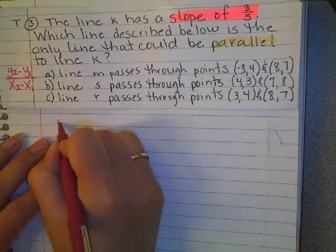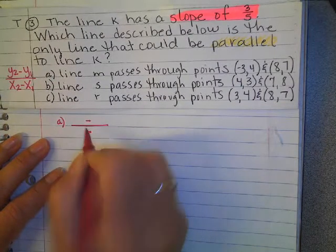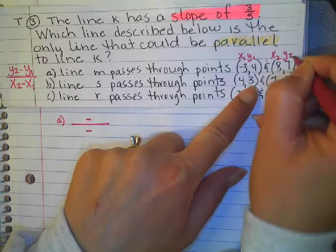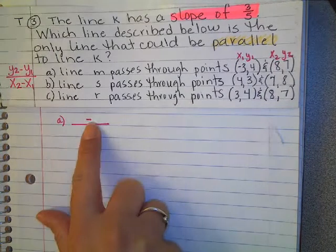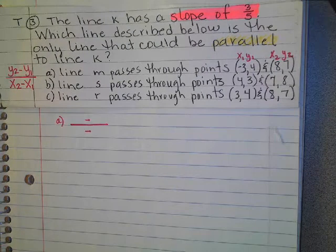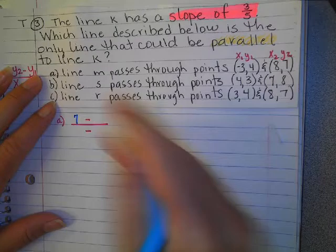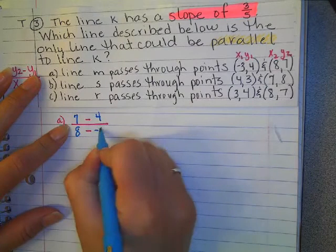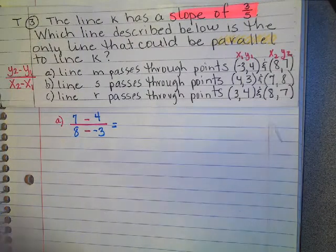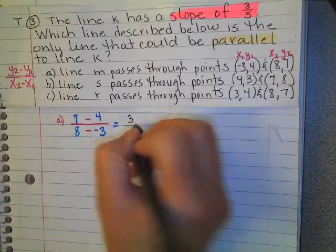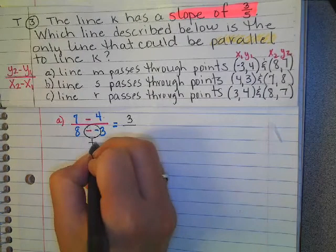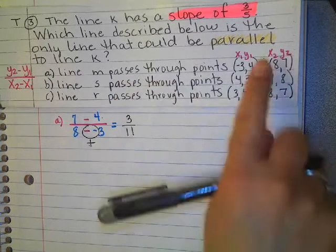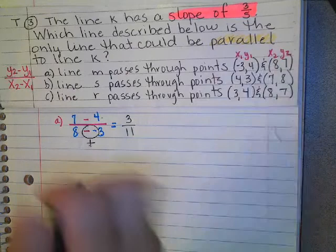So I'm gonna start with answer choice A. I'm gonna put my fraction bar with my subtraction signs already. And I'm gonna label my points. This is x1, y1. This is x2, y2. And I'm gonna choose a different color so that I don't get confused with minuses and negatives. So y2 is my 7, y1 is my 4, x2 is my 8, and x1 is a negative 3. Alright, well the top is easy. 7 minus 4, that's just 3. But here, if you did this correctly, then you're gonna have a minus with a negative and that's a plus. So 8 plus 3, that is 11. So I don't want 3 over 11. I want three-fifths so that it can be A. So then you go to B.